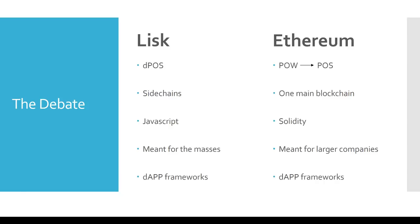Ethereum's consensus mechanism is proof of work, and they're currently in the process of transitioning over to proof of stake, which is probably going to take a few years. Proof of work is the same consensus mechanism that Bitcoin uses — miners with expensive mining rigs secure the network, and the incentive is that you get paid in that coin when you mine a block.